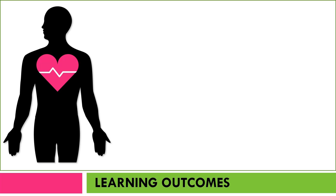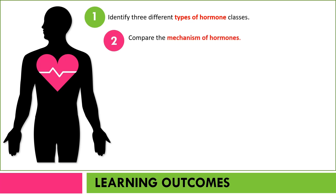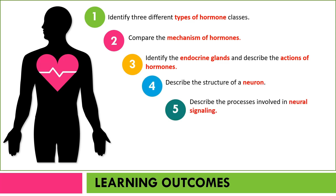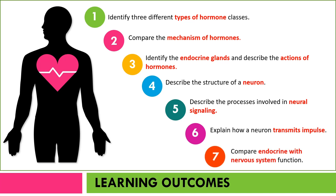These are the learning outcomes. At the end of the lesson, students should be able to identify three different types of hormone classes, compare the mechanism of hormones, identify the endocrine glands and describe the actions of hormones, describe the structure of neurons, describe the processes involved in neural signaling, explain how a neuron transmits impulse, and the last one, to compare endocrine with the nervous system function.